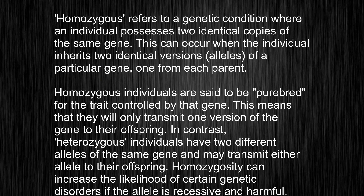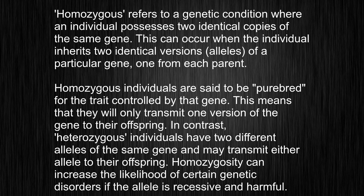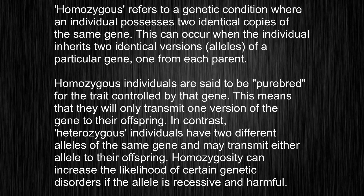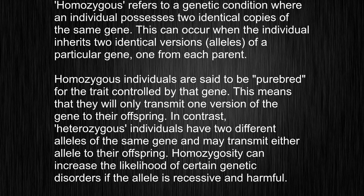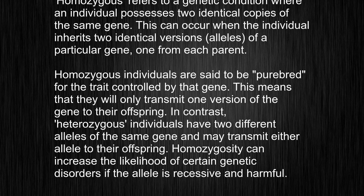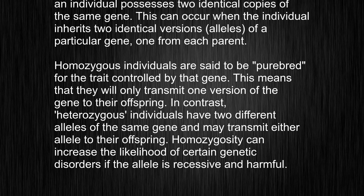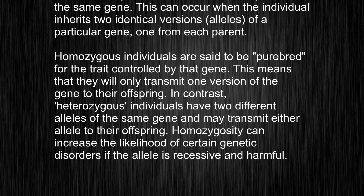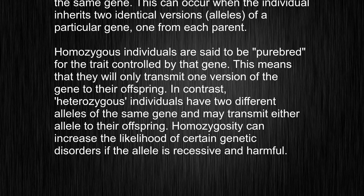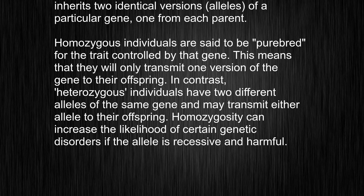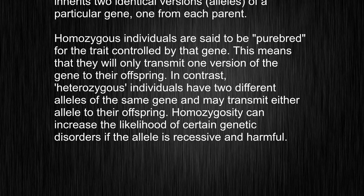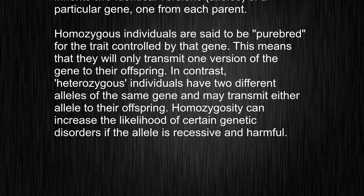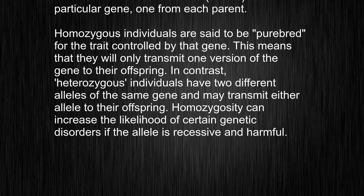Homozygous individuals are said to be purebred for the trait controlled by that gene. This means that they will only transmit one version of the gene to their offspring. In contrast, heterozygous individuals have two different alleles of the same gene and may transmit either allele to their offspring.